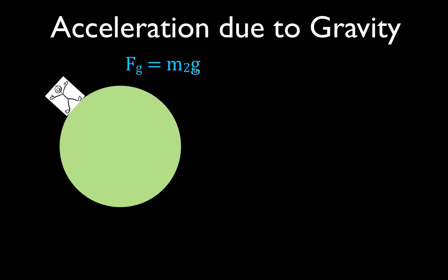This is the value we're going to derive in this video. We also calculated the weight using Newton's law of universal gravitation, which says the force of gravity between two objects equals the gravitational constant times the mass of one object — for example, the Earth — times the mass of the other object — for example, the person on the surface — divided by the square of the distance between those two objects. We got the same value, about 736 Newtons, using both equations.